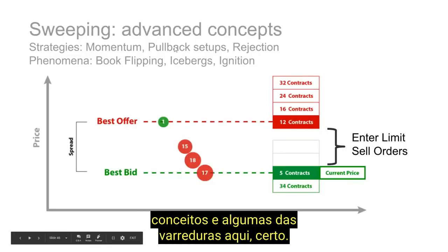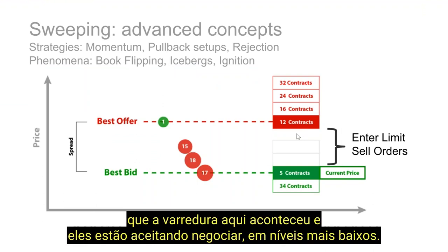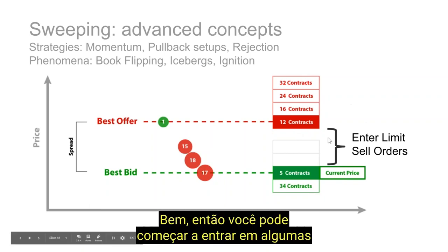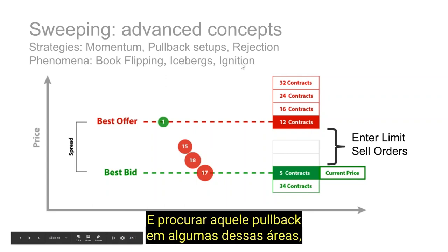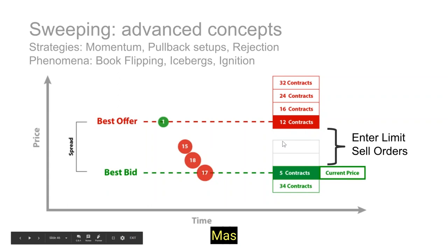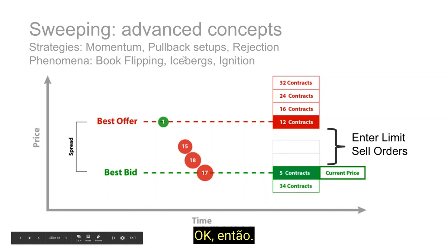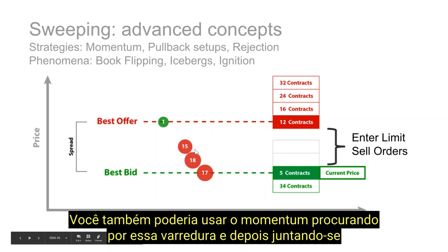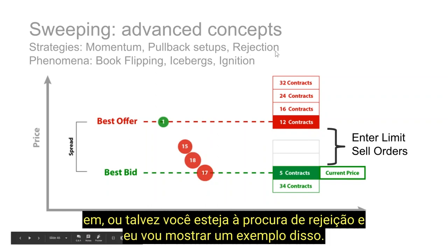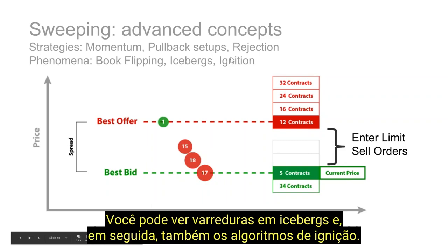You could also play momentum — looking for that sweep and then joining in — or looking for rejection. You'll also see book flipping, sweeps into icebergs, and ignition algos. Here we are in oil again — we swept down through to a lower level and it looks like price is starting to accept down below this lower level. Here's our pullback and we get another continuation. We actually see another sweep to the upside, and this one sweeps up to basically where it dropped from. Then we see yet another sweep — price starts to accept the level above, we sweep through it, get our pullback, and sweep down yet again, getting a pullback right to where we dropped from.